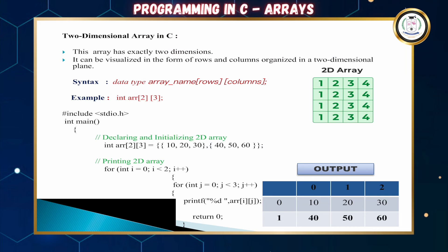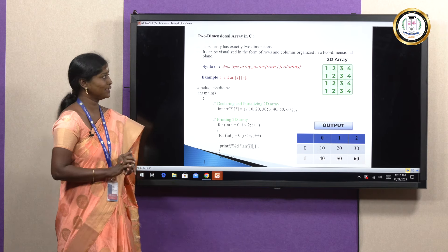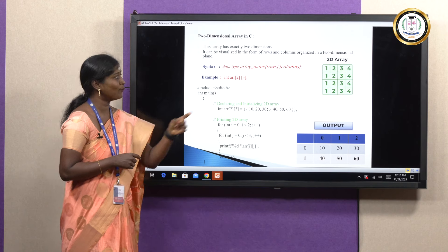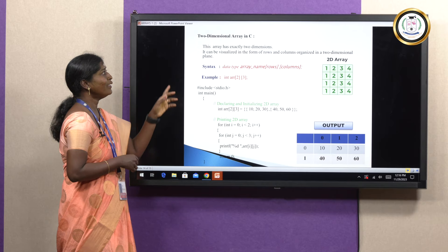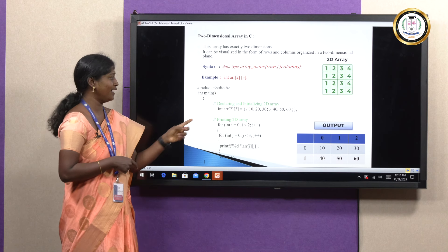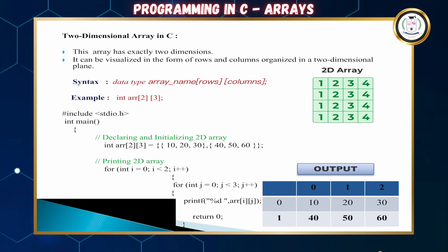A 2D array has exactly two dimensions: rows and columns. The syntax is: data_type array_name[rows][columns]. For example, int ARR[4][4] indicates 4 rows and 4 columns. In a C program, int ARR[2][3] means 2 rows and 3 columns, storing values 10, 20, 30 in the first row and 40, 50, 60 in the second row.